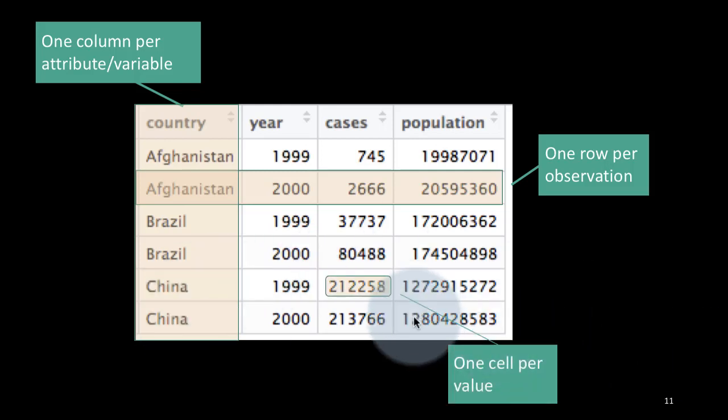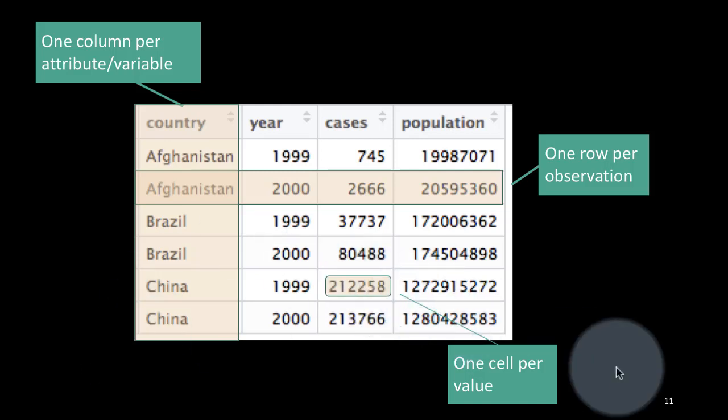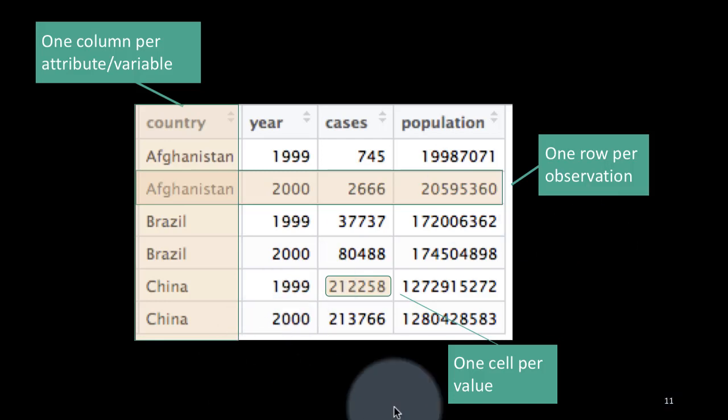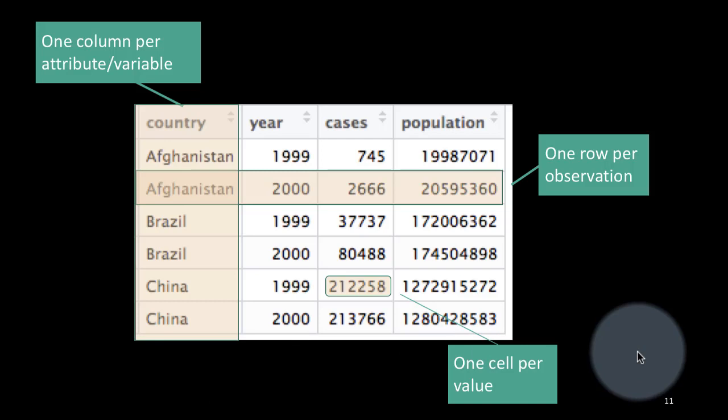And, of course, you have one cell per value. That is, each cell contains just one value. Multiple values are not jammed together in the cell. And that is the requirement of what is sometimes called in databases as a requirement for data in every cell to be atomic. That is, you cannot further break it down from the point of view of the application.